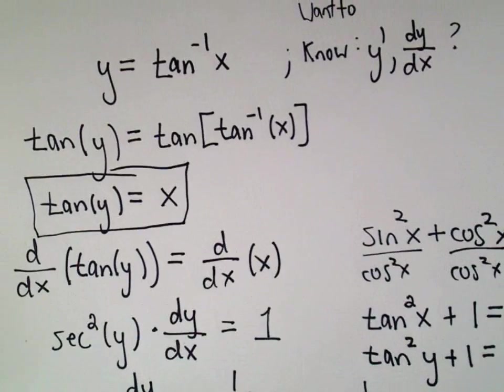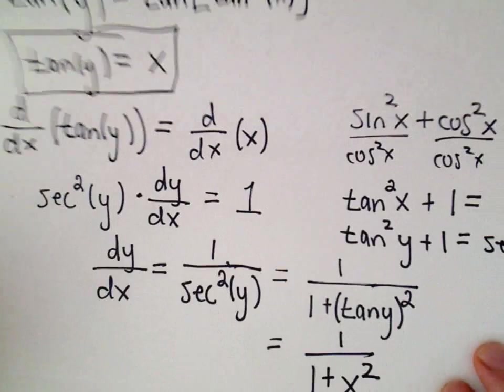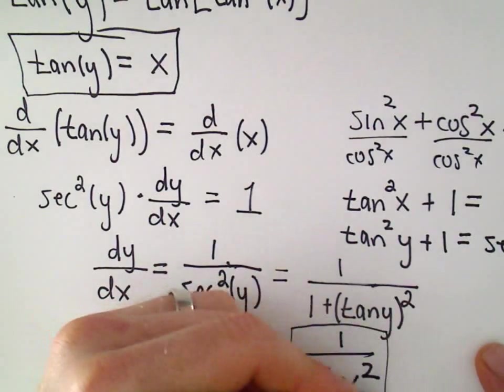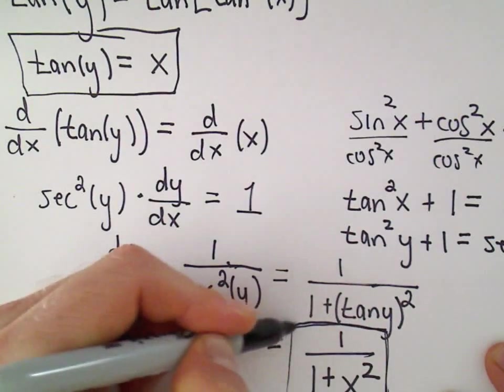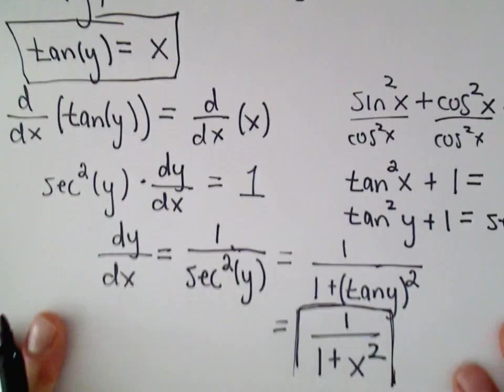So we would get 1 over 1 plus x squared, and that's the derivative for arctangent of x. The derivative of arctangent is the formula 1 over 1 plus x squared.